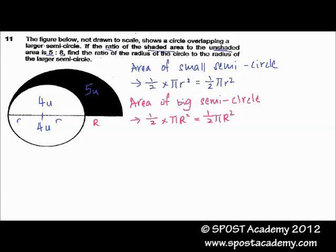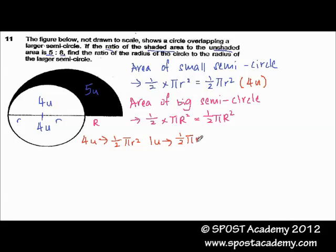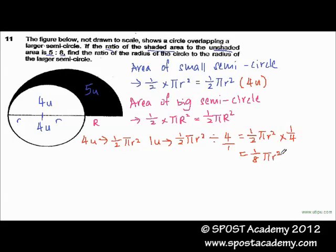The area of the small semicircle is equivalent to 4 units, so 4 units is equal to half pi r squared. To find 1 unit, we divide: half pi r squared divided by 4, which equals half pi r squared times one quarter — because we invert 4 over 1. This gives us 1 over 8 pi r squared.